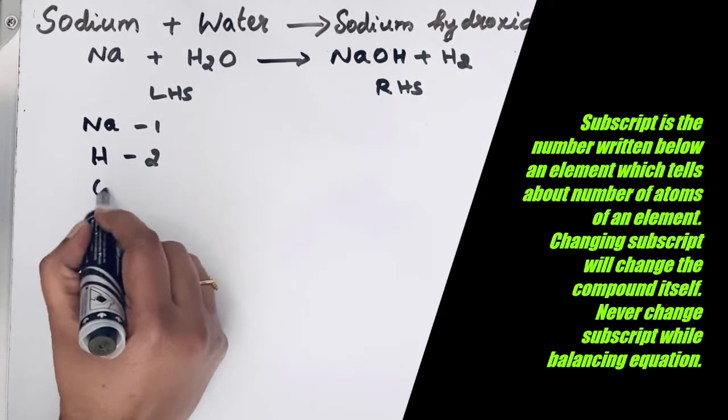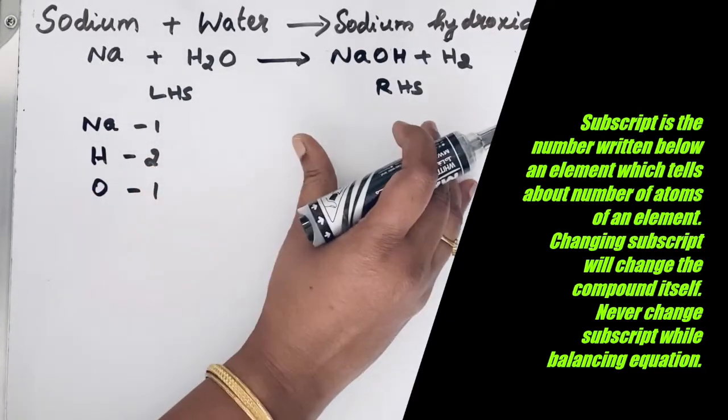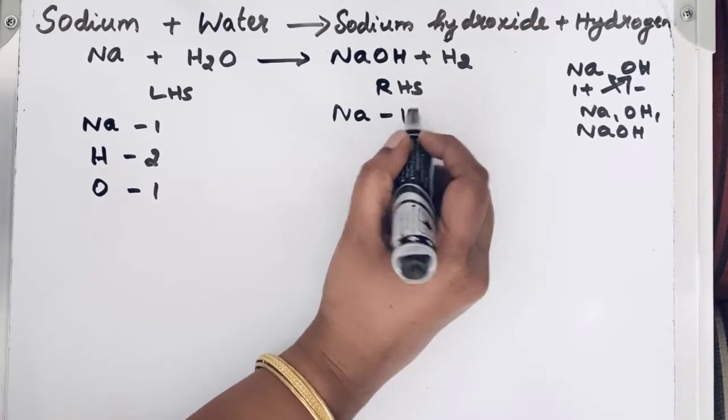So for oxygen, we have only 1. Same order, let us follow in the right hand side also. So for Na, we have only 1.